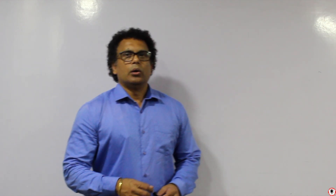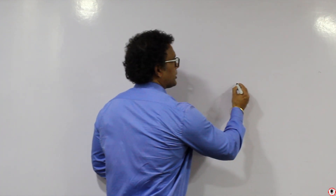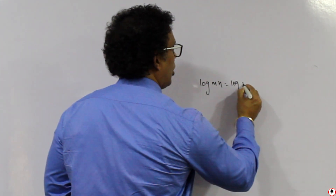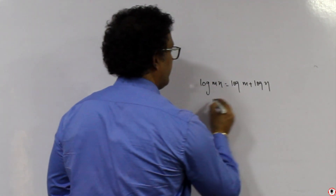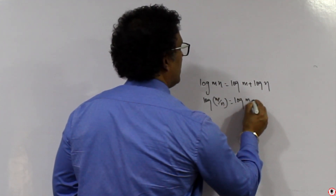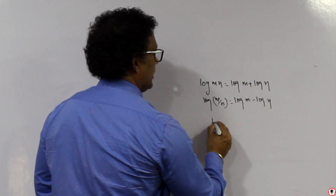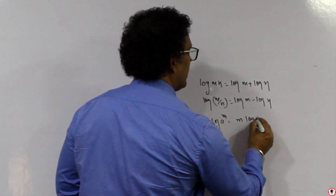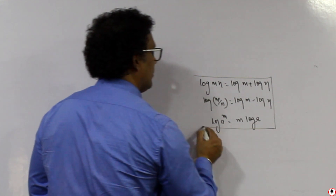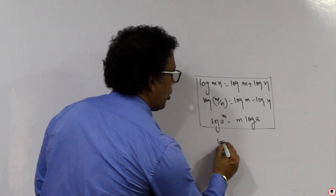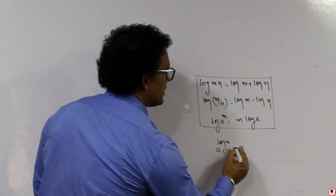We will study today how to read your logbooks. Basically with the log algorithm you have four formulas. The first is log of m×n becomes log m plus log n. The second is log of m÷n becomes log m minus log n. The third is log of a raised to m becomes m·log a. And there is one more: a raised to log of x to the base a equals x.